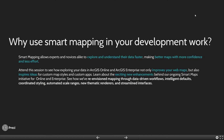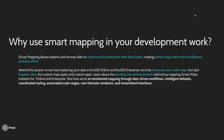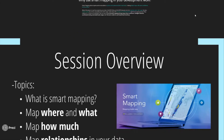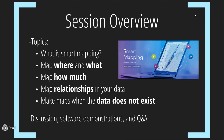Here's the session description that hopefully brought you here. Smart mapping is a great way to quickly explore your data. What I like about smart mapping is it rewards you for exploration — you're trying different things, exploring new ways, inspiring new ideas for your maps, and it quickly improves the quality of your maps. In this talk, we'll cover what smart mapping is, mapping where things are, what things are, how much, mapping relationships in your data, and making maps when the data does not exist.